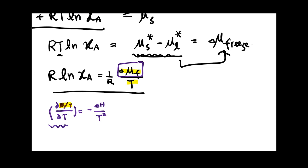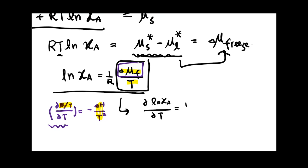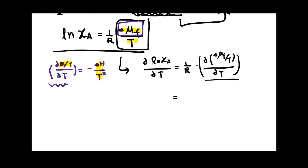So if we want to convert delta G into delta H, we have the term delta mu/T, and we take the partial derivative of both sides with respect to T. On the right-hand side, this gives us delta H over T squared. So partial(ln xA)/partial T equals (1/R) times partial(delta mu_F / T)/partial T, which equals (1/R) times negative delta H of freezing over T squared. On the left-hand side, all we get is ln(xA).